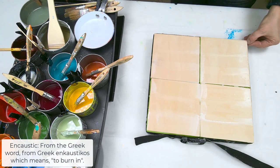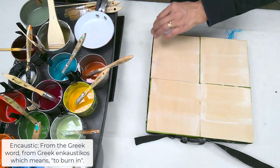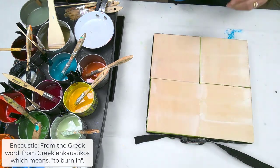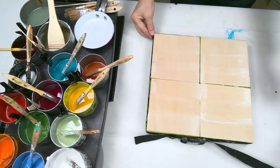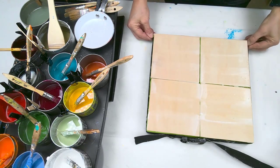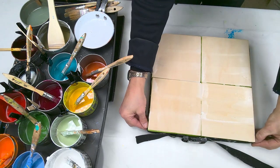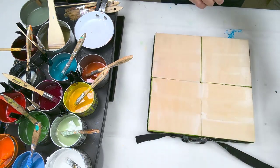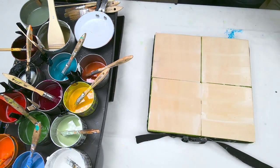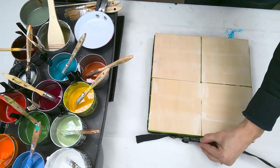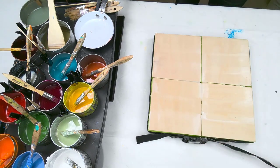They used to use encaustic to seal ships a long time ago and then later on encaustic was used to paint the Fayoum mummy portraits and from then kind of a lot of some popularity but then Jasper Johns in the 1970s brought it back to the forefront of art. So this is my presentation.